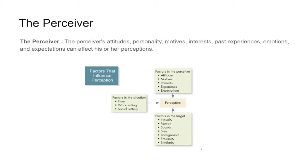We also have the perceiver themselves — what factors are influencing the perceiver? Maybe their attitude toward something. If I think you're a wonderful person, anything you say is going to be wonderful. If I think you're an awful person, anything you say is going to be awful. That's what we're getting at: what is the perceiver motivated by and how does it influence how the perceiver perceives?